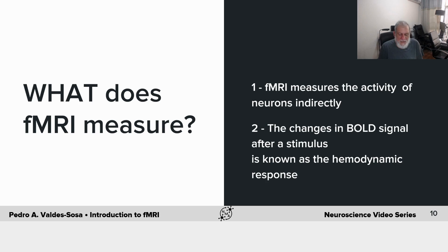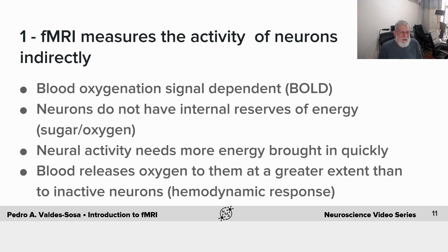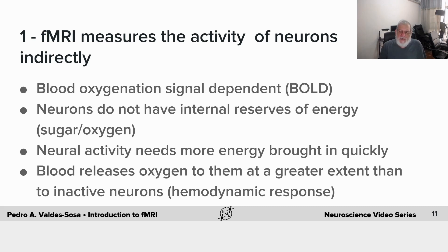Let's go into what is actually measured in fMRI. The one we're referring to is the blood oxygenation level-dependent mode. We have to remember that neurons do not have internal reserves of energy, sugar, or oxygen. Neural activity needs more energy that's brought in quickly — so quickly that the blood then has practically more oxygen than is really necessary. This is known as the hemodynamic response.